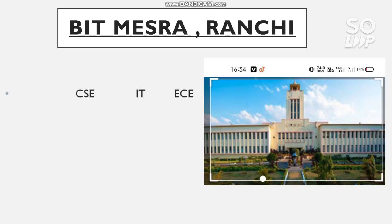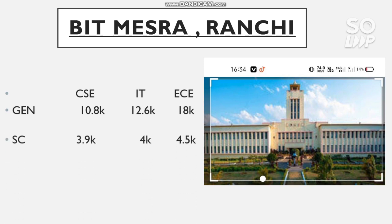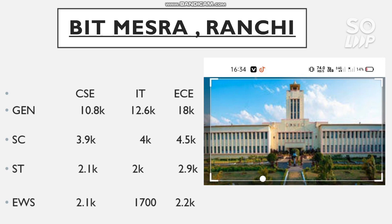The last GFTI in this video is BIT Mesra, Ranchi. The remaining GFTIs will be covered in Part 3, so stay tuned and subscribe the channel. Here is the category-wise cutoff. For General: 10,800 (CS), 12,600 (IT), 11,000 and 18,000 (EC). For SC: 3,940 and 4,500. For ST: 2,120 and 2,900. For EWS: 2,100, 1,700, and 2,200. There is no OBC reservation for this college.